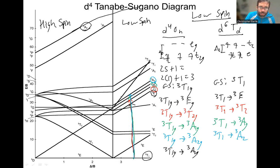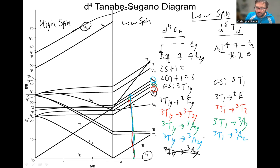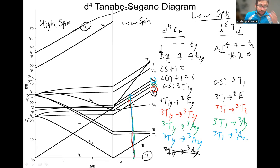That fifth transition is technically allowed but it's so high in energy that for practical purposes in a UV-vis spectrum it's not going to show up. So you're going to have four main peaks in most UV-vis spectra. The fifth one will be off the charts — too high in energy. And depending on the strength of the ligand and the scan range of your UV-vis spectrum, you might not even see some of the higher energy ones.